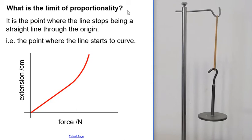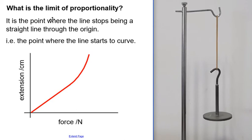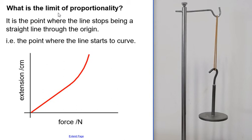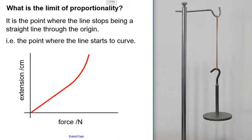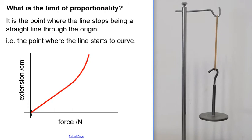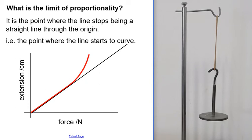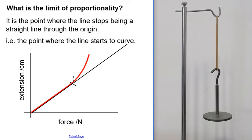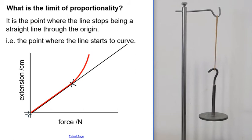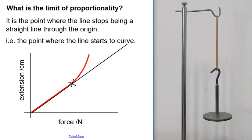Springs aren't the only things that obey Hook's Law — a normal piece of metal wire will obey Hook's Law up to a point as well. The limit of proportionality is the point where the line stops being a straight line through the origin, where it starts to curve. You can identify this by placing a ruler up against the straight portion of the graph, and as soon as the line starts to curve — around here — that is the limit of proportionality.